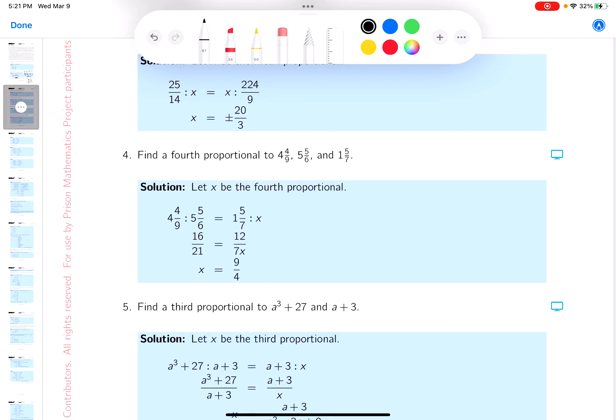Again, my recommendation is to write those mixed numbers as improper fractions. So 4 and 4 ninths, 36 and 4 is 40 ninths, and 5 and 5 sixths, 30, 35 sixths, and this one and 5 sevenths, that's 12 sevenths.